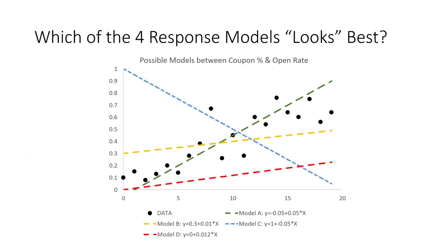Now, let's look at these four potential response models. These dotted lines are simple linear models with a y-intercept and a slope parameter. If I gave you these four different response models and asked you to pick the one that best represents the relationship, which one would you pick?